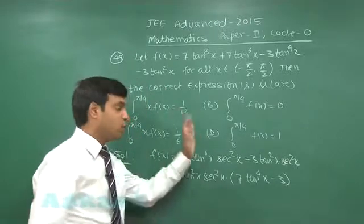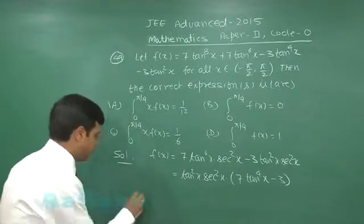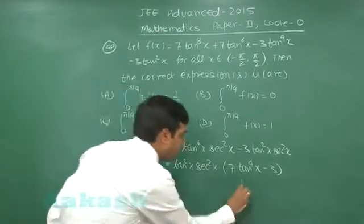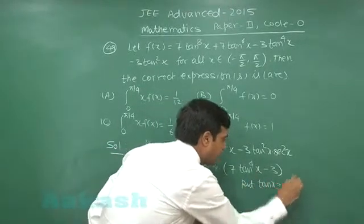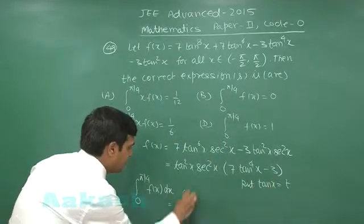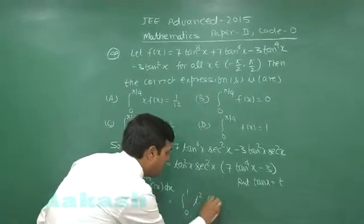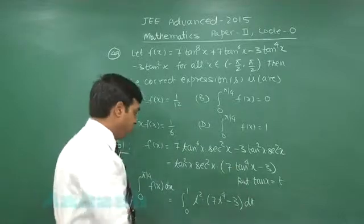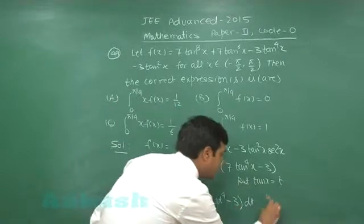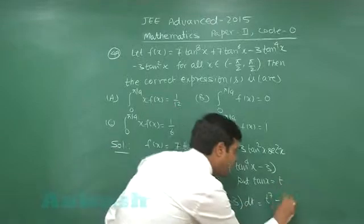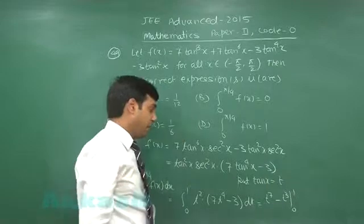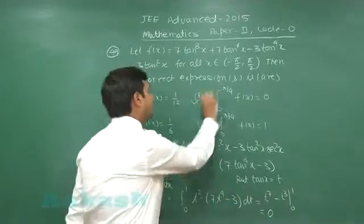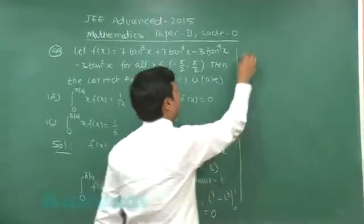Integral 0 to π/4 f(x)dx. When I say tan(x) as t, I obtain integral 0 to 1 t^2 multiplied with (7t^4 minus 3)dt. On integrating, we obtain the term simply as this becomes 7t^6 means t^7 minus 3t^2 that is t^3 under the limit 0 to 1. When we substitute here 1, it is 1 minus 1 equals 0, when we substitute 0 again 0. Simply the result is 0 means b is correct.